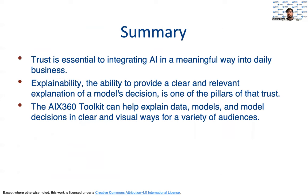This concludes our case study on explainability of AI. To summarize, trust is essential to integrating AI in a meaningful way into daily businesses. Explainability is the ability to provide a clear and relevant explanation of a model's decision, and this is one of the pillars of trust. The AIX 360 Toolkit can help explain data, models, and model decisions in clear and visual ways for a variety of audiences. Thank you.